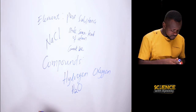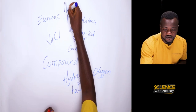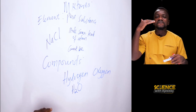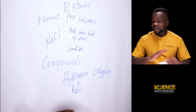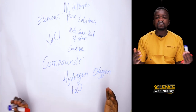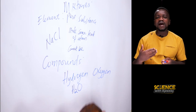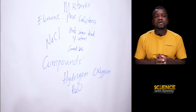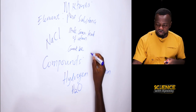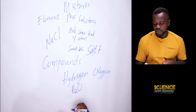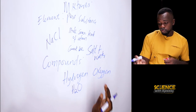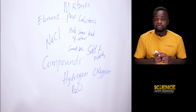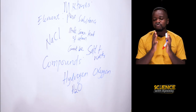Now let's look at mixtures. Mixtures are basically the physical combination of two or more substances. And because it is a physical combination, the products that are formed can be separated by physical means. Let's say we have a mixture of salt and water. Salt is a compound — sodium chloride — and water is also a compound, H2O. When you mix them together physically, it becomes a salt solution.